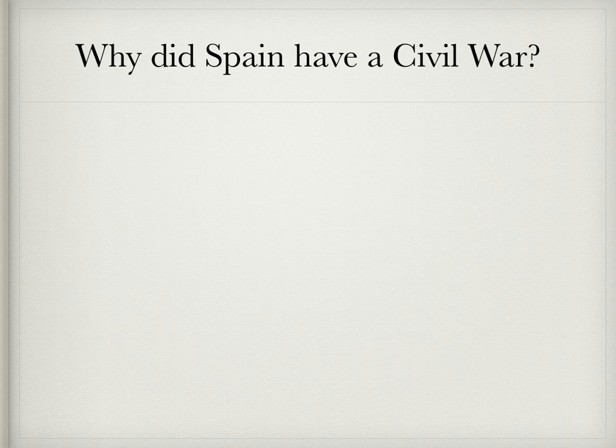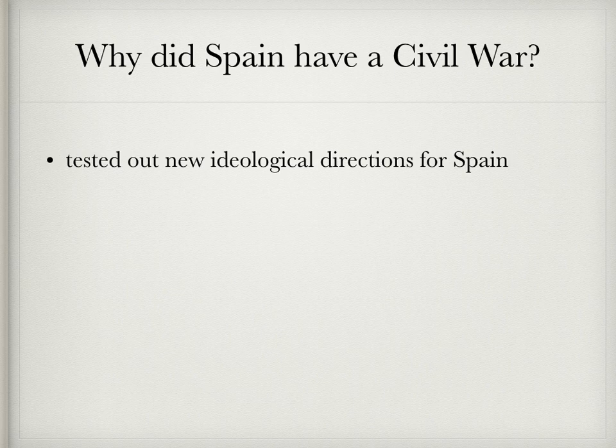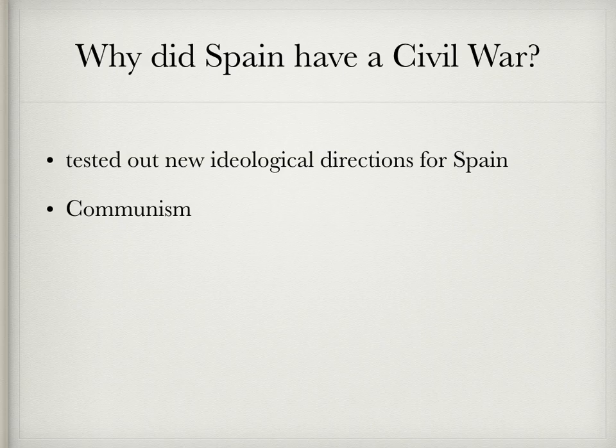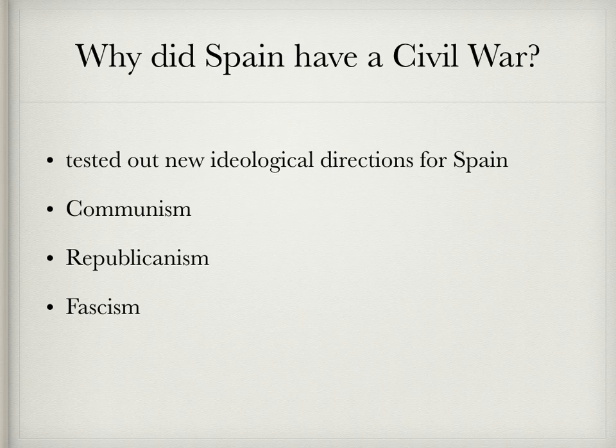Why did Spain have a civil war? Here in Spain we see neighbor fighting neighbor, peasants fighting local authorities. What this war really became was a kind of testing ground — it tested out new ideological directions for Spain. We see communism, republicanism, and fascism. All these different 'isms' that were popping up in the 1920s and 30s struck an ideological chord with the people within Spain.